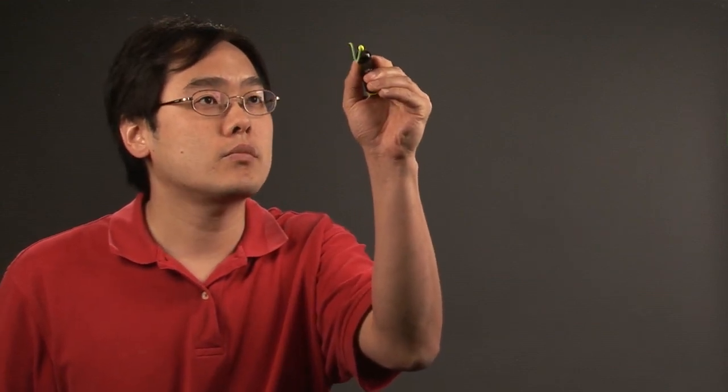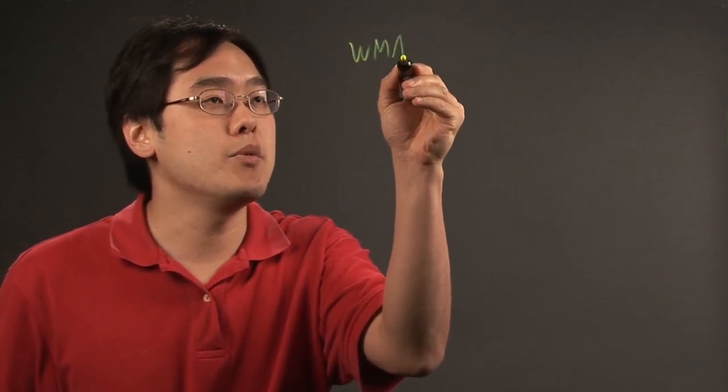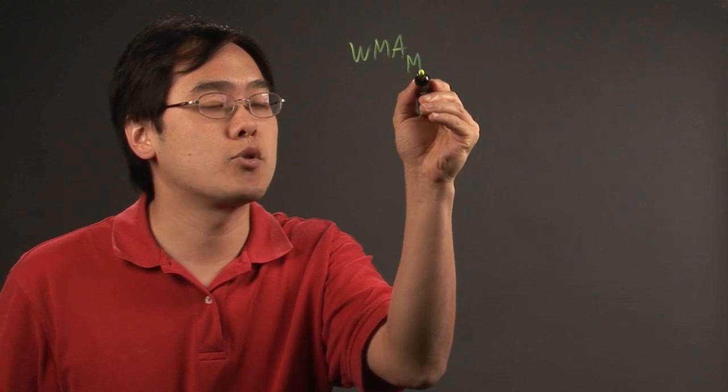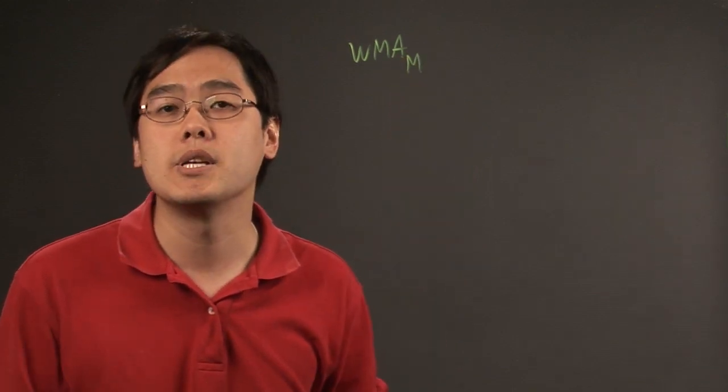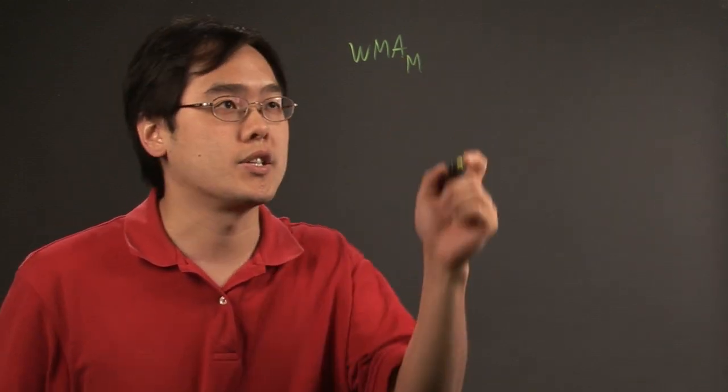Here's the formula associated with that. The weighted moving average is WMA with subscript m. There's going to be a lot of subscripts in this particular formula, so keep that in mind.